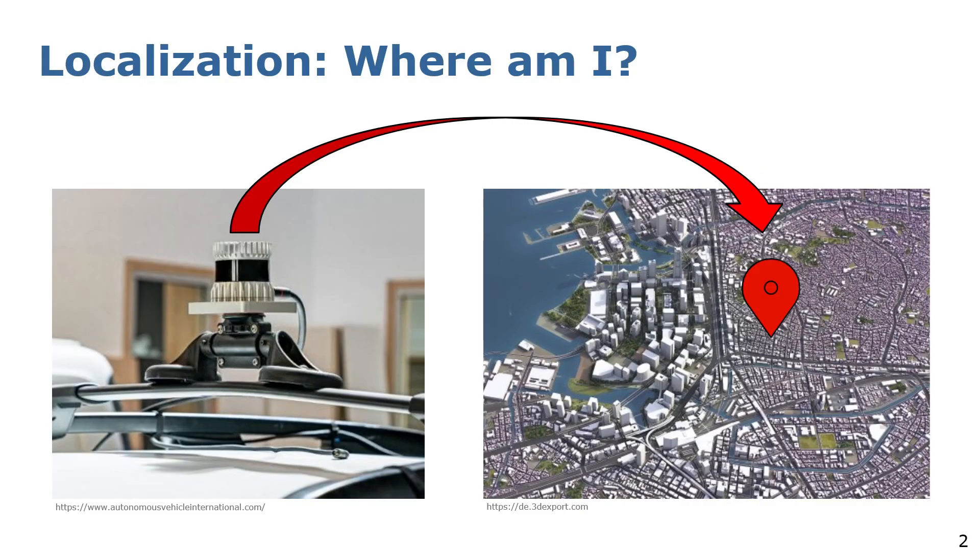Localization answers the question: where am I? We want to know our position in a given map using sensor observations. In the automotive domain, sensors like this LiDAR are commonly used. These provide point cloud data of the surrounding of the vehicle at up to 20 Hz. Knowing how our environment looks like can help us to find our position in a given map. In this work, we want to investigate how to model the environment such that we can localize our LiDAR sensor in it.